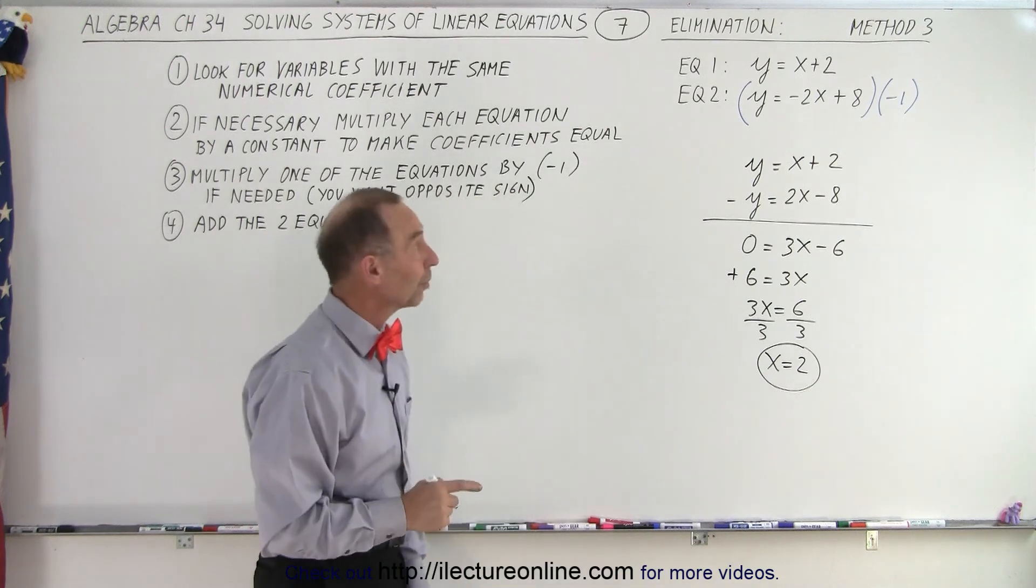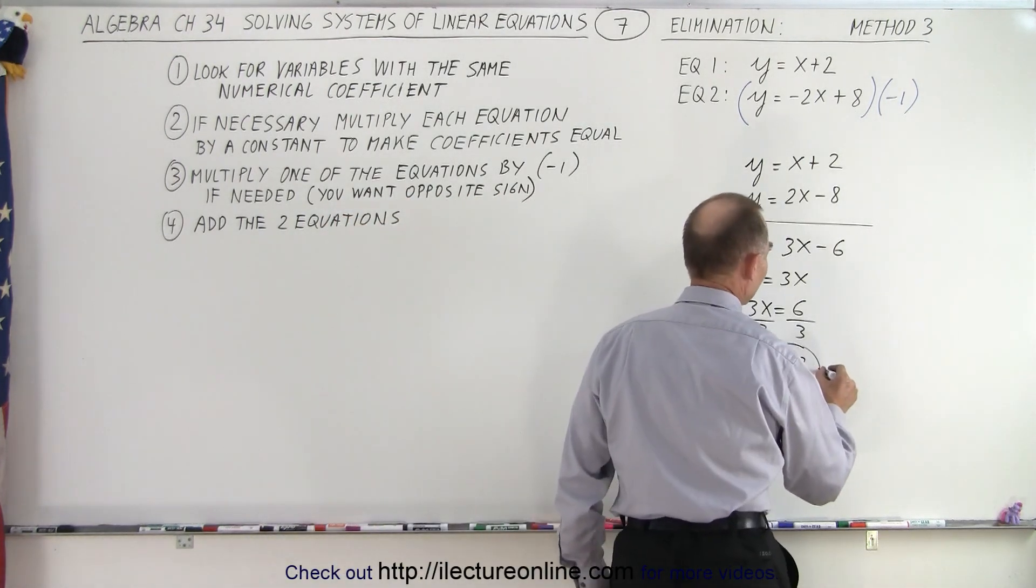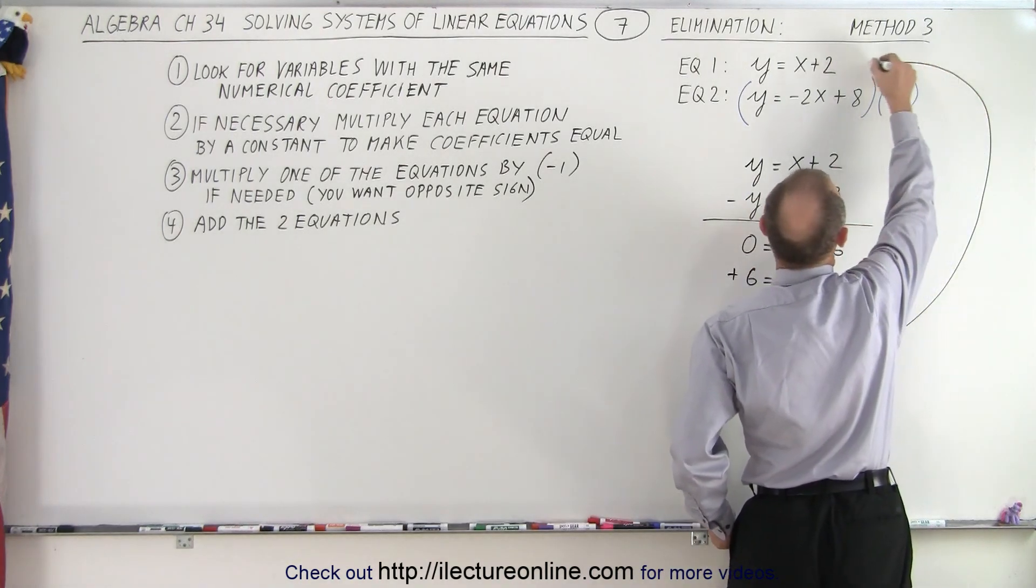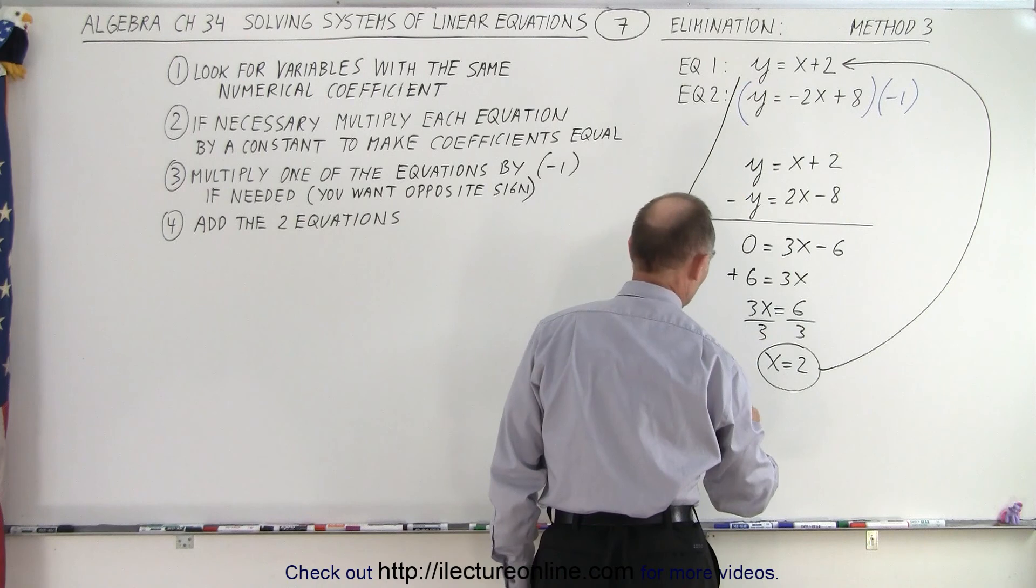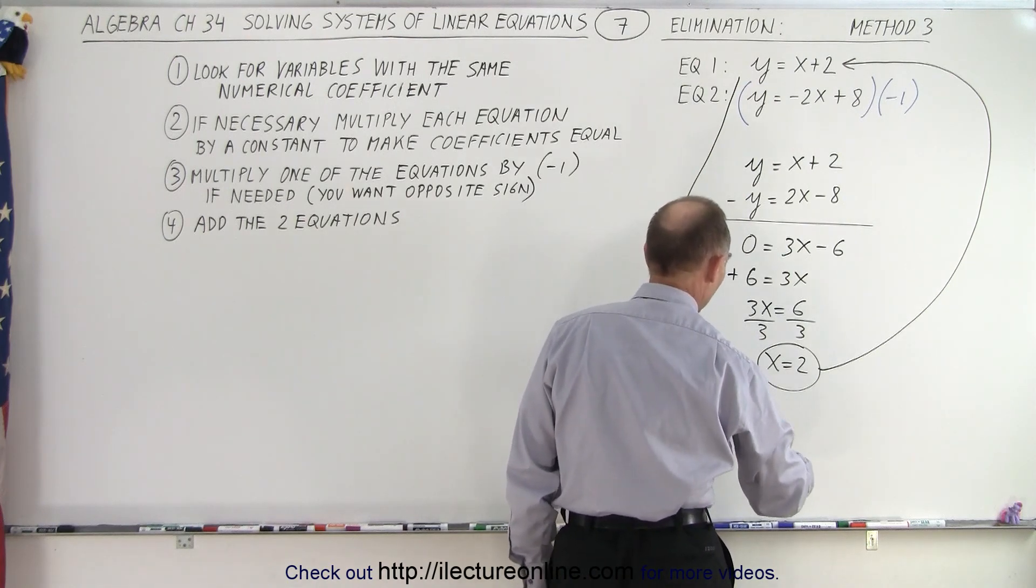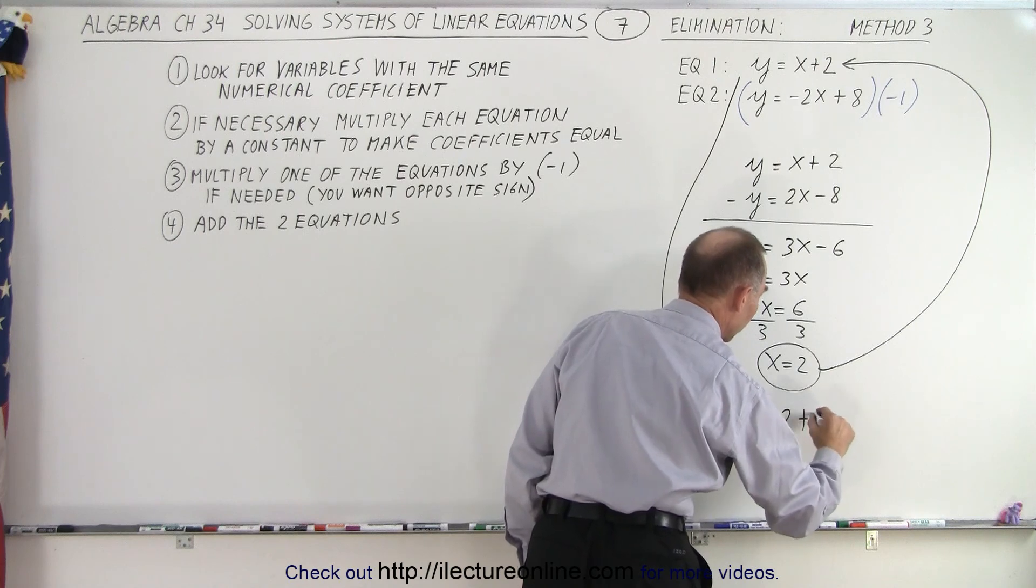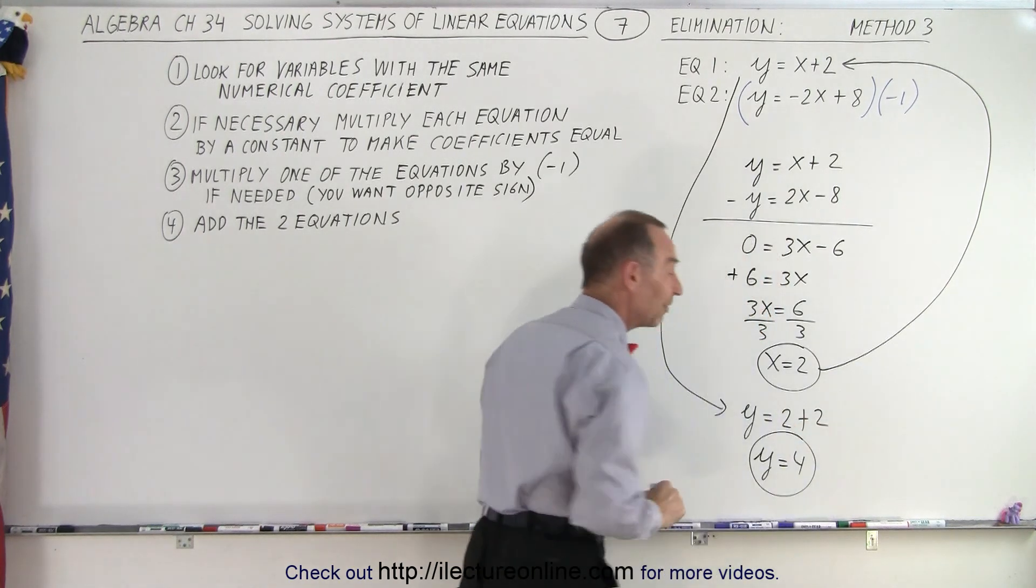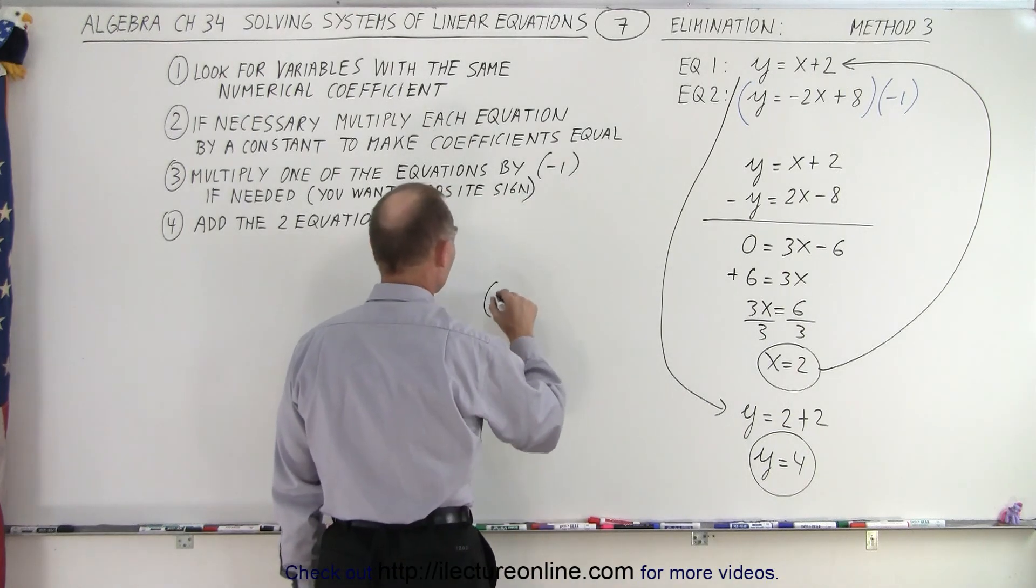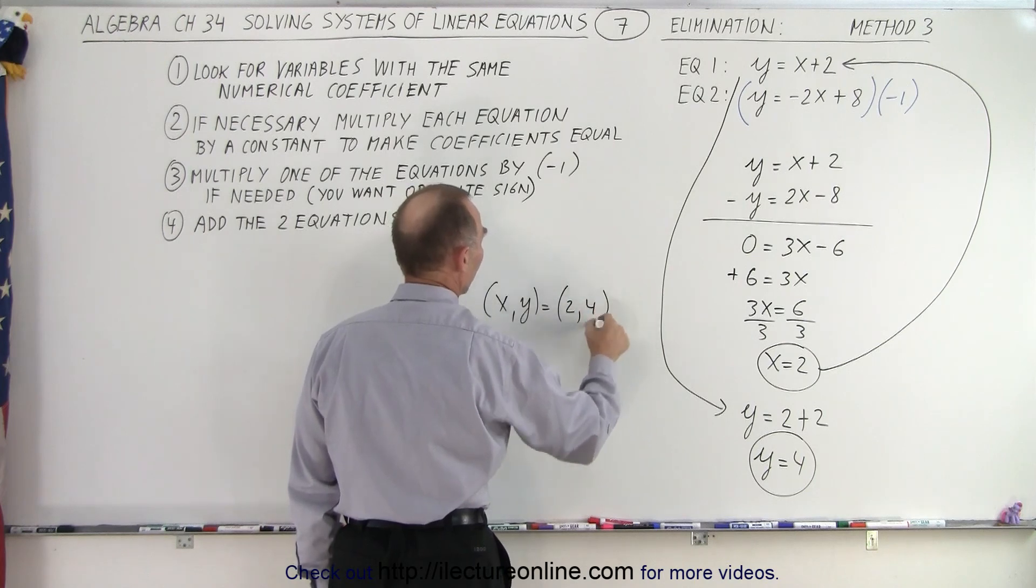Once you have one of the variables, you then plug that back into one of the two equations. And the best equation to plug that into will probably be the first equation. So then we take that equation and we rewrite it as y equals, instead of x, we write the number 2 plus 2 or y equals 4. So now we have the x and y coordinates of the point we're looking for. So we can say that x and y is equal to 2 and 4.